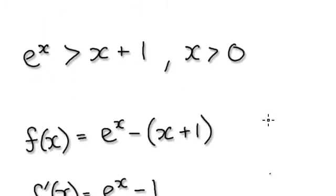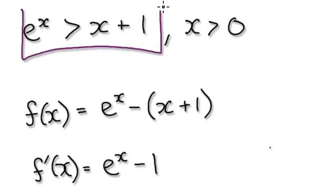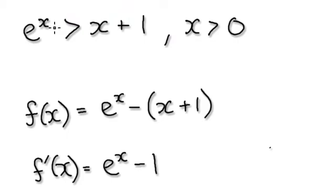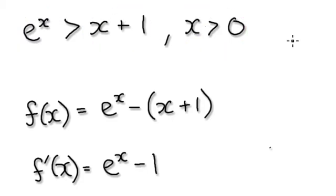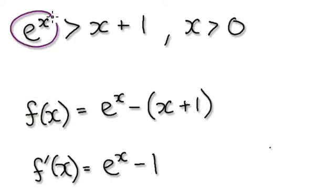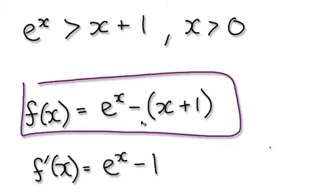Now I'm going to give you an example. How would you go about proving that e to the power of x will always be greater than x plus 1 for x being bigger than zero? To do this, we would define a function — just define it as e^x minus (x plus 1), taking away this. So let's define the function to be that.